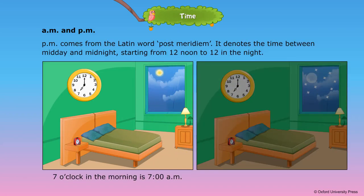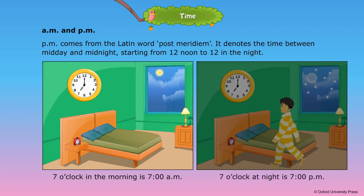P.M. comes from the Latin word post-meridiem. It denotes the time between midday and midnight, starting from 12 noon to 12 in the night. 7 o'clock at night is 7 p.m.